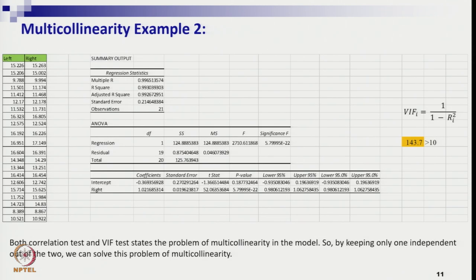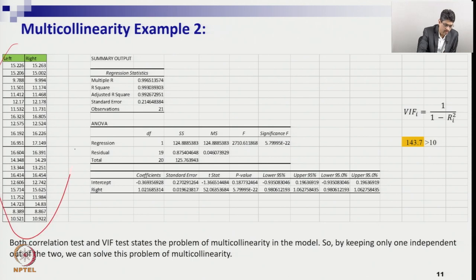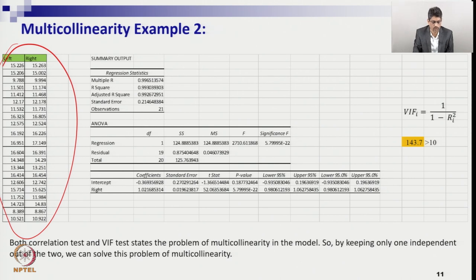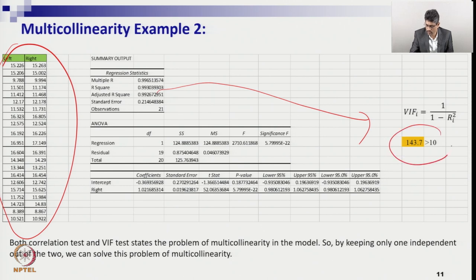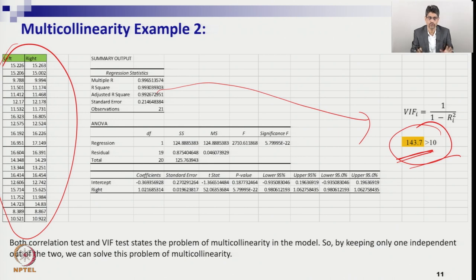We found a strong correlation of 99% between the left foot and right foot data. So we calculated the VIF. We ran the regression between x1 and x2 (left foot and right foot) and found a VIF of 143, because with an R-squared of 0.99, VIF equals 1 divided by (1 minus 0.99) which is approximately 143 — far above 10. We cannot include both variables together.